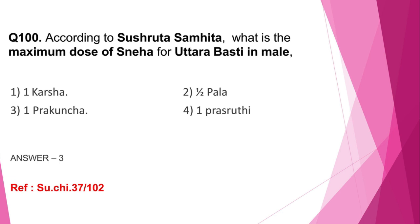Question number 100: According to Sushruta Samhita, what is the maximum dose of Sneha for Uttaravasti in male? Options: One Karsha, Half Pala, One Prakunja, One Prasrithi. The correct answer is option 3, One Prakunja, as the shloka states: 'Sneha Pramanam Paramam Prakunjascha Atrakirtitha.' In Uttaravasti, there are differences in the dose of medicine with respect to age, gender, marga, etc. Compare and learn. Thank you.